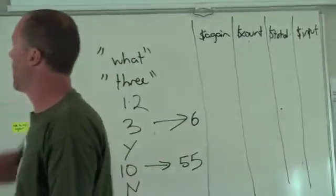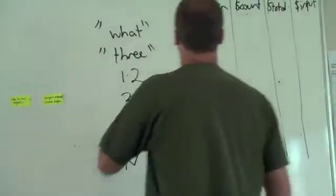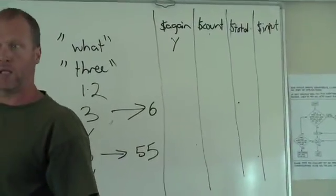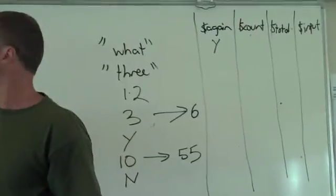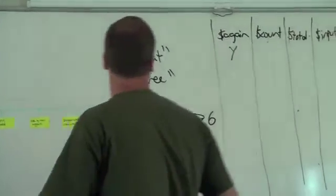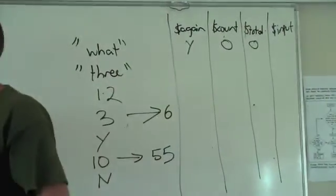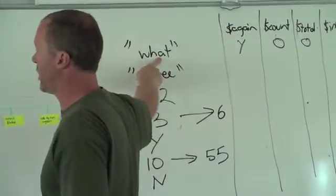So we start off with dollar again equals Y. The first thing we're doing. Does again equal Y? It does, so we're going to do this loop. Total equals zero. Count equals zero. Dollar input. Get an input from the user. What input are we getting? What?